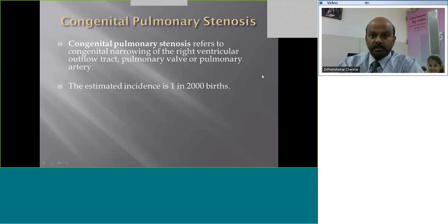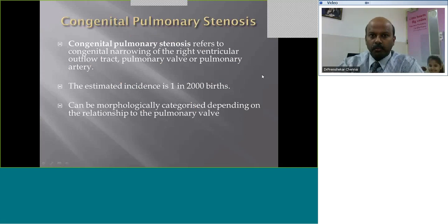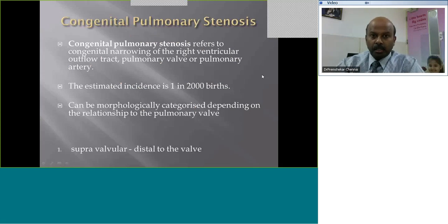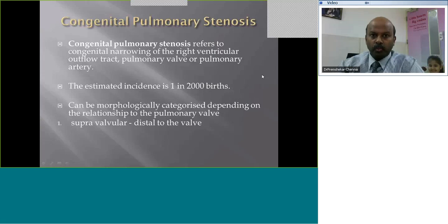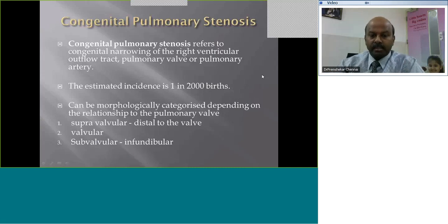Estimated incidence is 1 in 2000 births, so fairly common. We tend to come across it fairly frequently in our practice. Depending on the morphological location of the narrowing in relation to the pulmonary valve, we can categorize it as supravalvular when distal to the pulmonary valve, valvular, or subvalvular when it's in the infundibular part of the right ventricle.